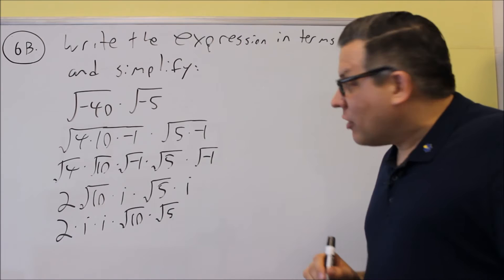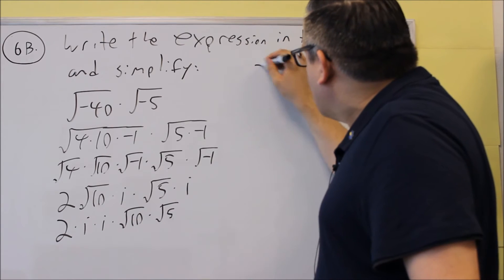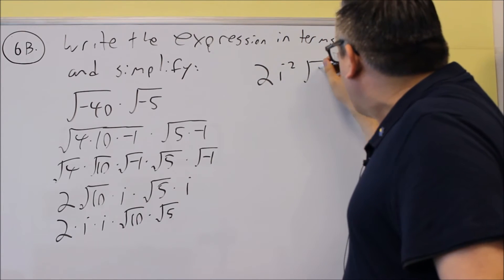These two i's, we're going to multiply together, and you get i squared. So that would be 2i squared, and then you would get square root of 50.